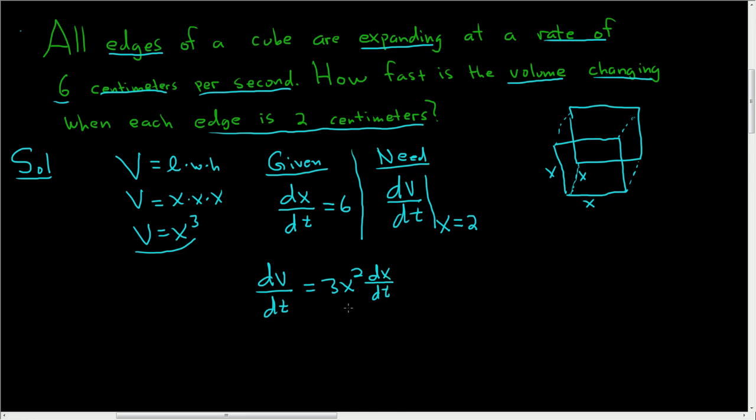which is dx/dt. We know dx/dt is 6, so this is 3x squared times 6, so this is 18x squared. 6 times 3 is 18.